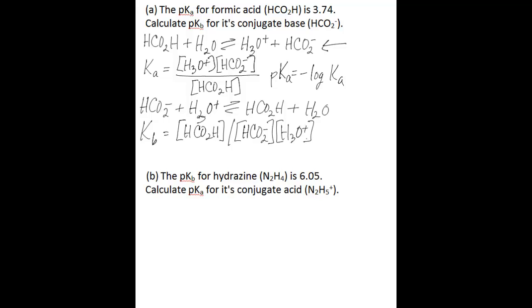So the important relationship you need to know for this problem, if you want to go directly from pKa to pKb - because you could also find pKb as the negative log of Kb - the relationship you should know is that pKb equals 14.00 minus pKa.